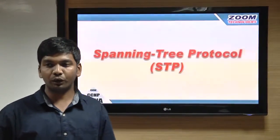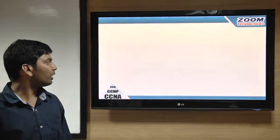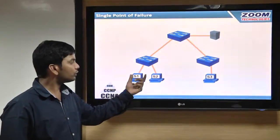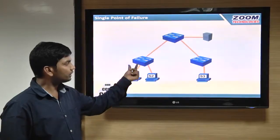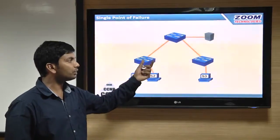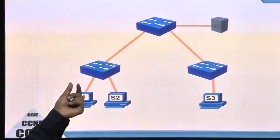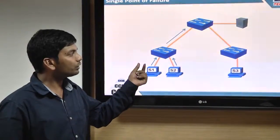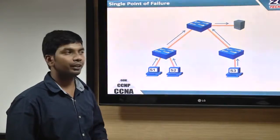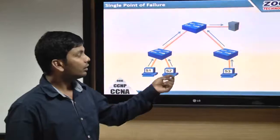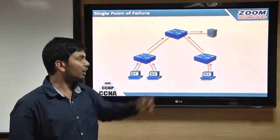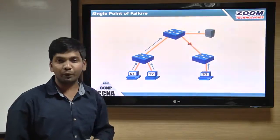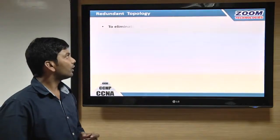We will see spanning tree protocol in our normal networks. For the communication part, we use switches to connect all the systems and network devices. I am using three switches with PCs connected to them. There is a server with three systems connected to it, but it is a single point of failure. If there is a link failure between switch A and C, then there is no communication between switch C and the server.